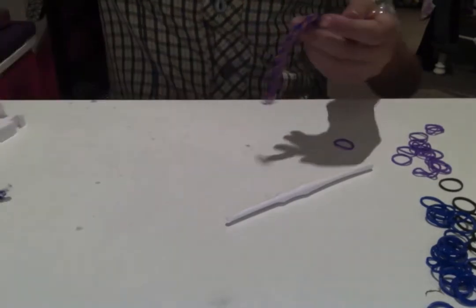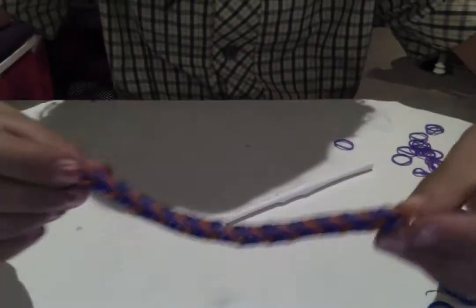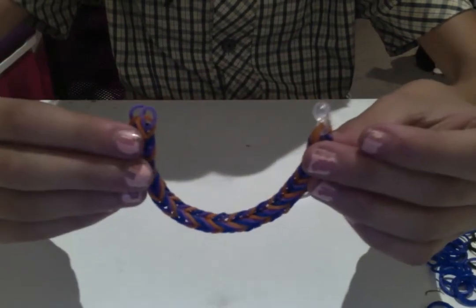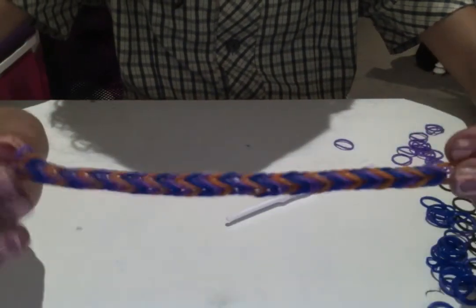Alright, so when you're finished, it should look like this, and you should have had your C-clip, your S-clip or C-clip, ready. So this is what it will look like when it's done.